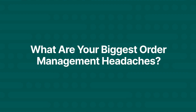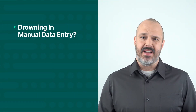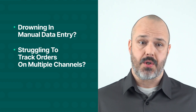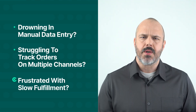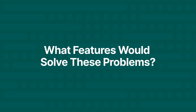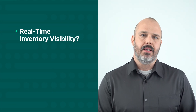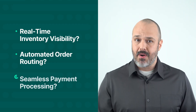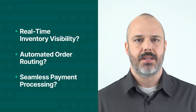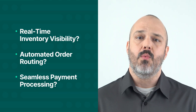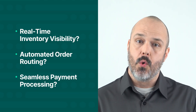To help you find the perfect fit, let's break down some key questions. What are your biggest order management headaches? Are you drowning in manual data entry, struggling to track orders across multiple channels, or frustrated with slow fulfillment? Identifying your pain points will clarify what you need. What features would solve these problems — do you need real-time inventory visibility, automated order routing, or seamless payment processing? Make a wish list of must-have features for your ideal solution.